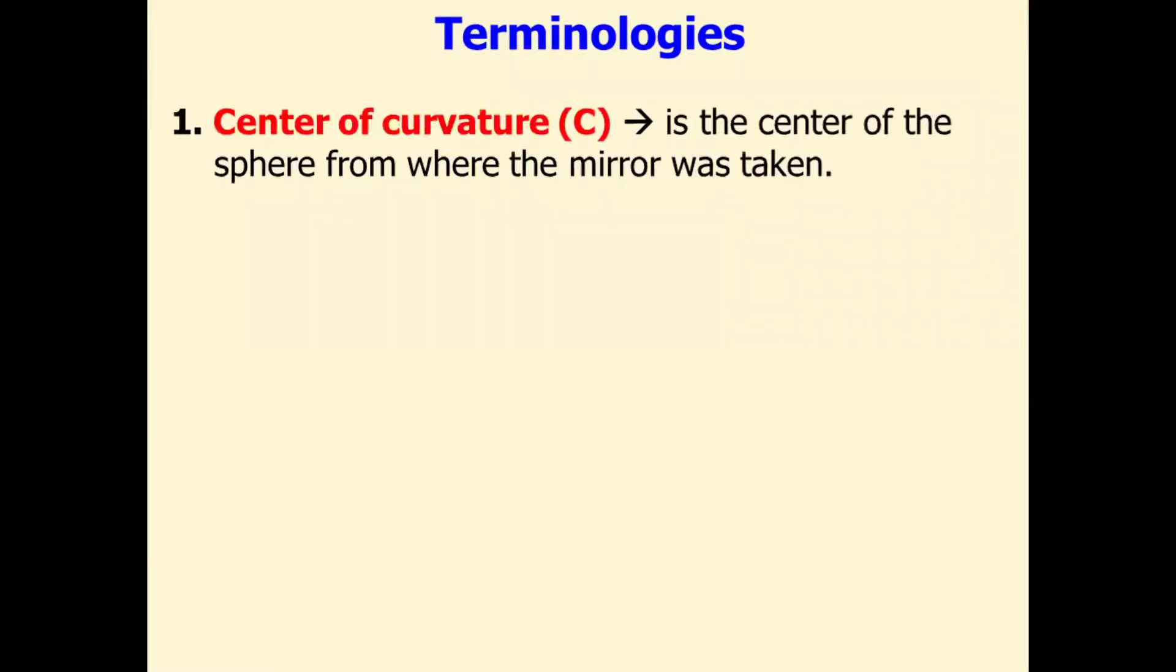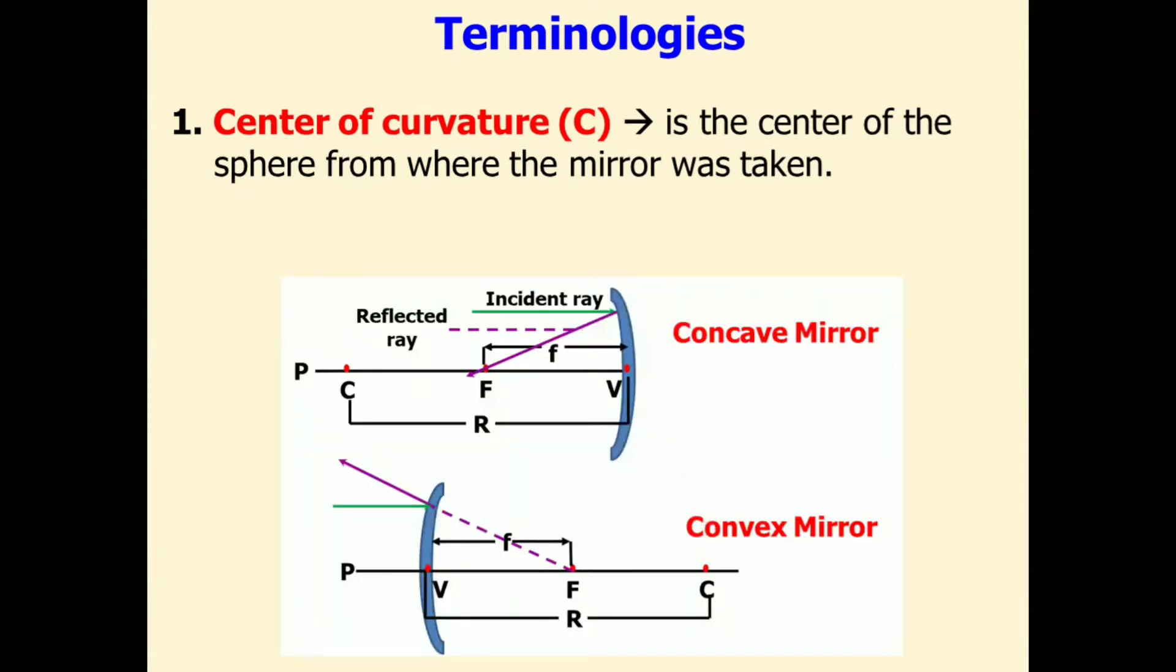The first one, the center of curvature, is represented by letter C. It is the center of the sphere from where the mirror was taken. And in the illustration below, this is the center of curvature.